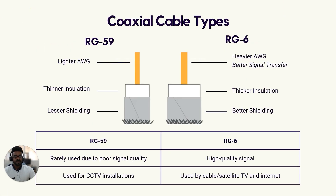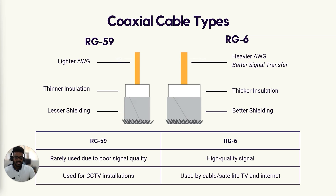The first type is RG59. RG59 is constructed similarly to the generalized description. These cables are used for video transmission in CCTV systems and were once used to transmit satellite and cable TV broadcasts. RG59 coaxial cables aren't used much anymore because they lose signal quality over long distances. So instead, almost all industries use the second type: RG6.